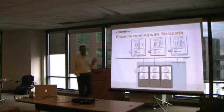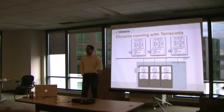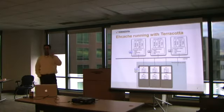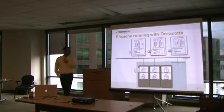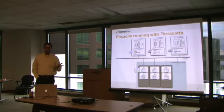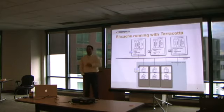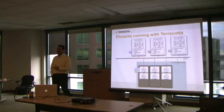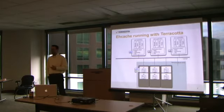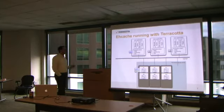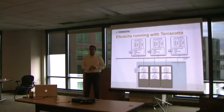EHcache running with Terracotta has a multi-dimensional purpose. First and foremost, it's to maintain the simplicity of EHcache - you've got EHcache in your app, you snap Terracotta in with no code changes, and all the data you want in Terracotta will be stored there. That gives you linear scale, massive datasets - EHcache can only handle what fits in RAM on one machine, whereas Terracotta can handle terabytes of cache. We're benchmarking petabyte storage and a billion cache entries. It's large-scale datasets, linear scale-out, and high availability.